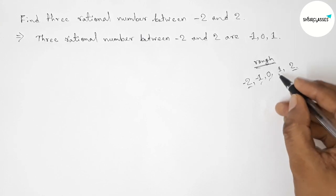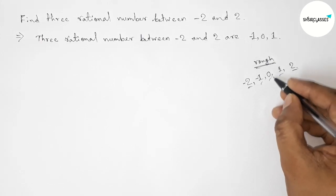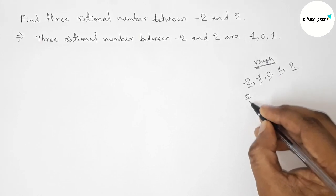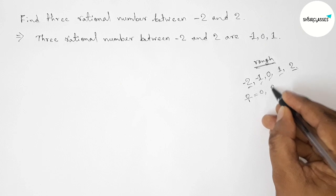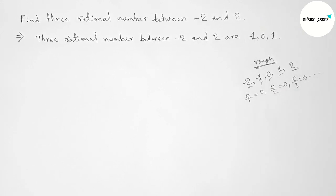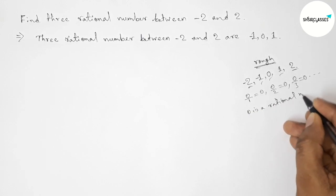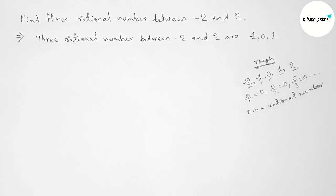You can find many other rational numbers, but here these are three rational numbers between minus two and two. And here zero is a rational number because we can express zero as a p by q form. So zero is a rational number. So that's all, thanks for watching you.